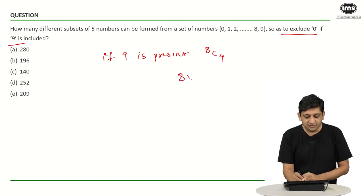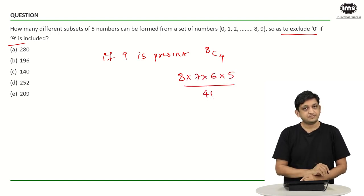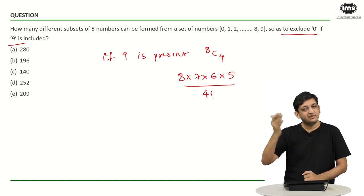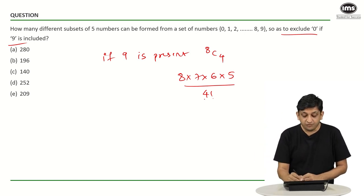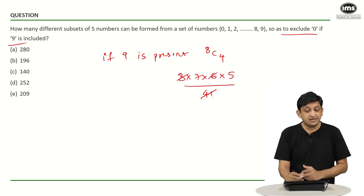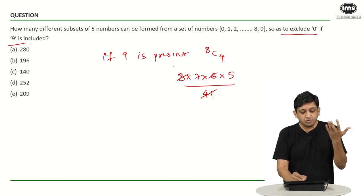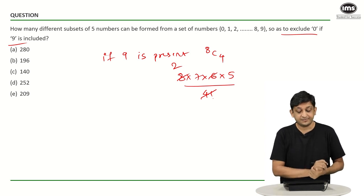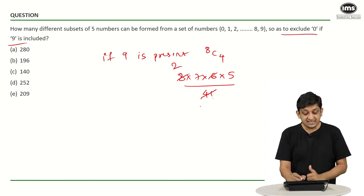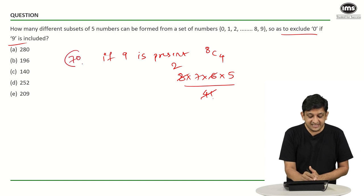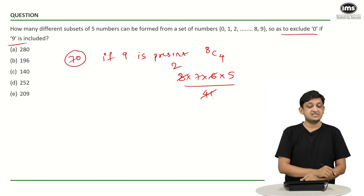With a bit of practice you can do it directly: 8 into 7 into 6 into 5 divided by 4 factorial. The other 4 factorial cancels from numerator and denominator. 4 factorial is 24; 6 times 8 are 48, divided by 24, gives 2. So we get 2 into 7 into 5 — 14 times 5 is 70. So there will be 70 cases.